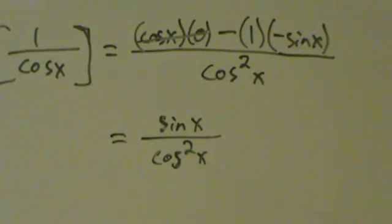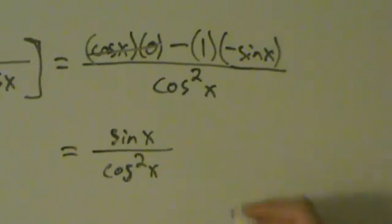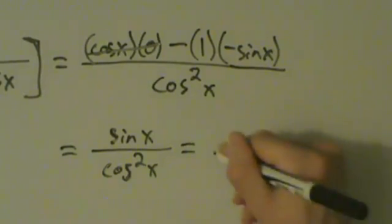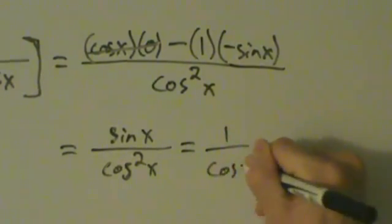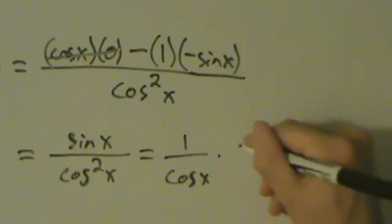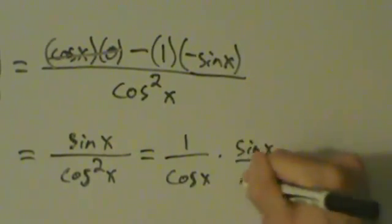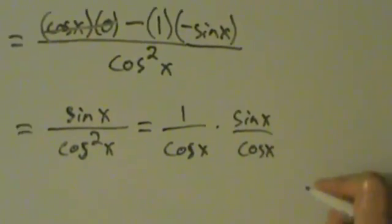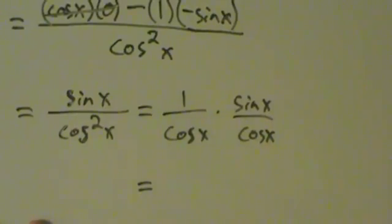Okay, so where do we go from here? Well, we can rewrite this as 1 over cosine x times sine of x over cosine x, all right? And that actually just equals,